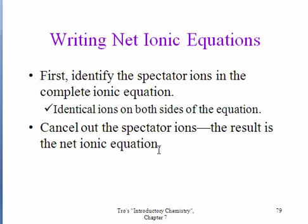So to write a net ionic equation, first we write out our complete ionic equation. Then we identify the spectator ions, we cancel them out on both sides, and what we're left with is the net ionic equation.